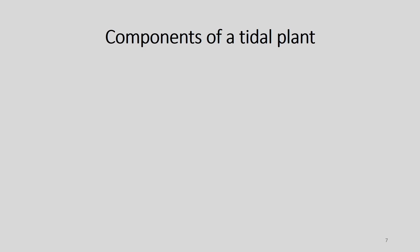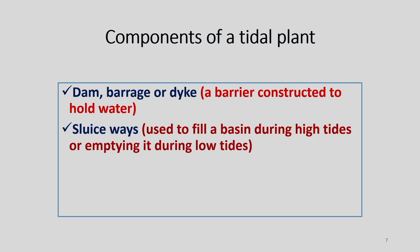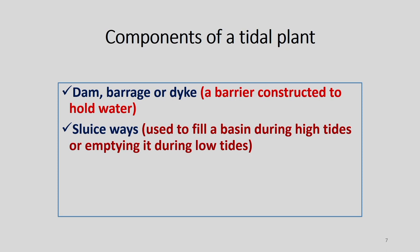The components of a tidal plant include: first, a dam, barrier, or dike — a barrier constructed to hold water. Second, sluice gates, which are rapid control gates used to fill a basin during high tides or empty it during low tides. Third, a bow-type power turbine generator set, contained in a steel cell where alternators and special Kaplan turbines are housed with variable pitch blades.